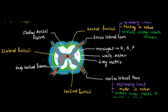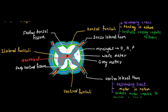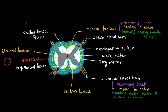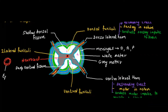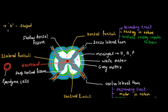The central cavity of the spinal cord is called the neurocele. This neurocele is lined by specialized cells called ependymal cells, and these ependymal cells are responsible for producing CSF — cerebrospinal fluid. This is how the transverse section of the spinal cord appears.